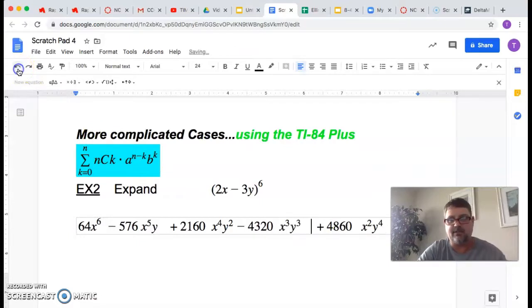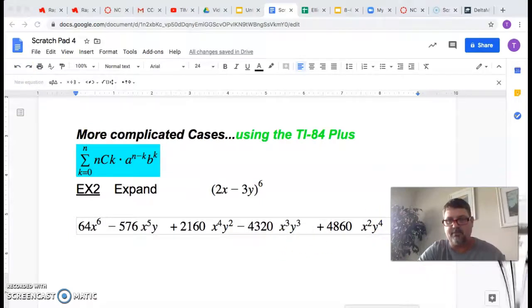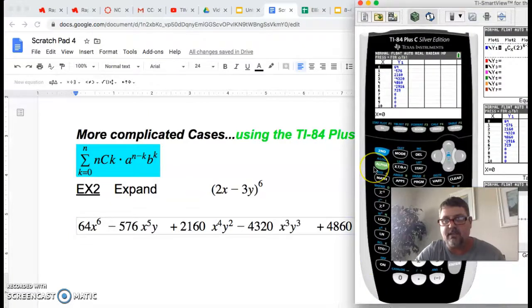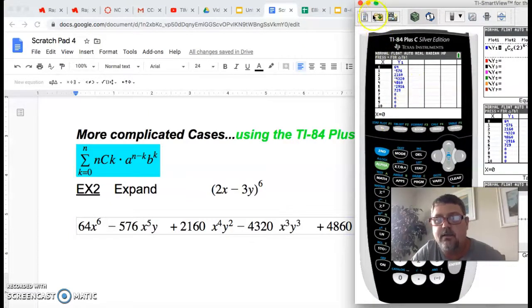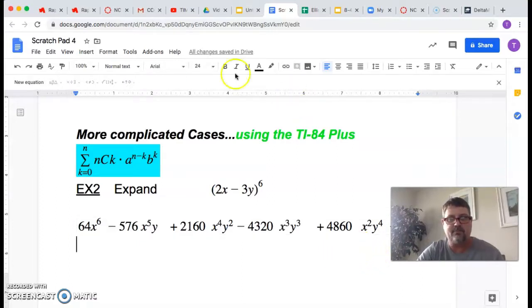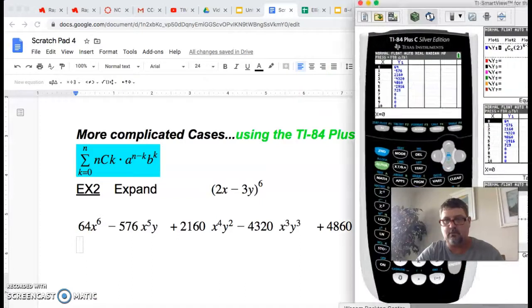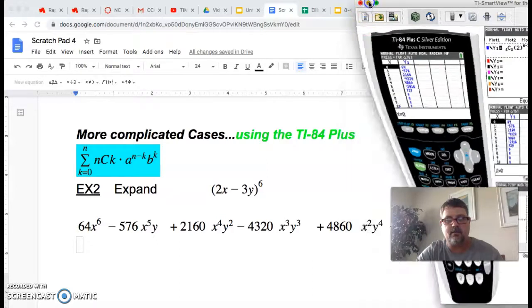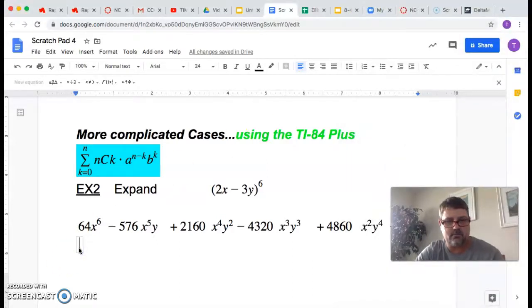And the next one is, almost done here, negative 2,916, negative 2,916. And the final term is 729, 729y to the sixth power. And that should be it. Now that one is negative, so he's positive.